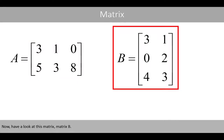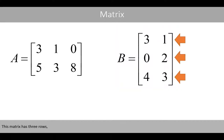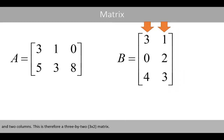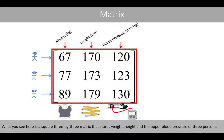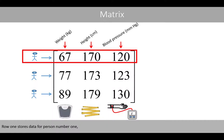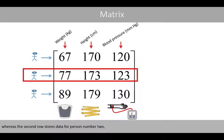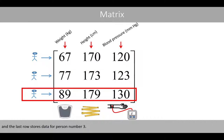Now have a look at matrix B. This matrix has three rows and two columns, and is therefore a three by two matrix. What you see here is a square three by three matrix that stores weight, height, and upper blood pressure of three persons. Row one stores data for person number one, whereas the second row stores data for person number two, and the last row stores data for person number three.